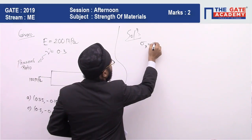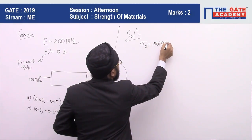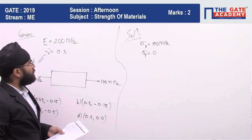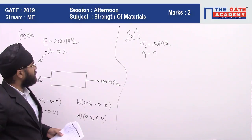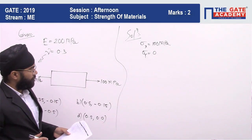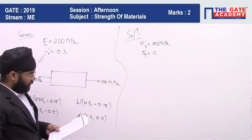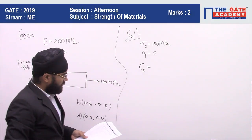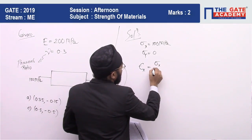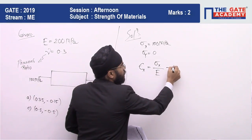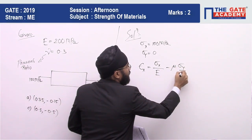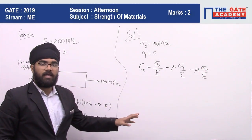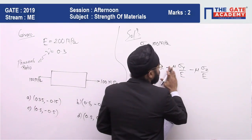Now let us solve this question. We know sigma x is 100 megapascal. Sigma y is 0 — there is no stress in the mutually perpendicular plane. Strain in the x-direction is given by: epsilon x = sigma x divided by E, minus nu times sigma y divided by E, minus nu times sigma z divided by E. Since sigma y and sigma z do not exist, those two terms are zero.